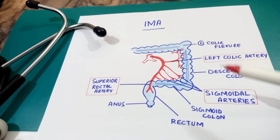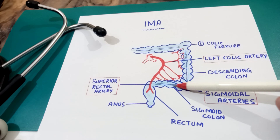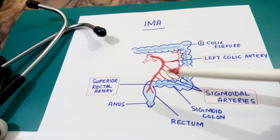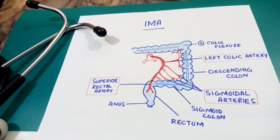Overall, the inferior mesenteric artery supplies the distal one-third of the colon, the descending colon, sigmoid colon, rectum, and the upper half of the anus. In this way it supplies the hindgut — the part of the gut embryologically derived from the hindgut. It is a branch of the abdominal aorta arising anteriorly. If you have any questions you can ask me. Thank you so much.